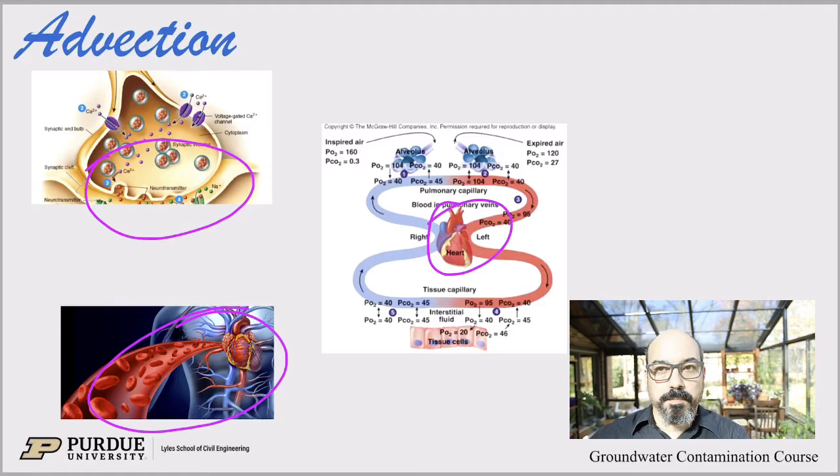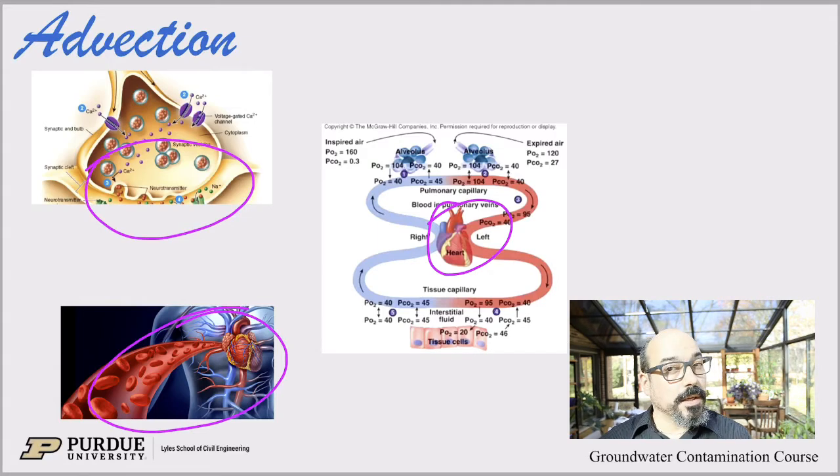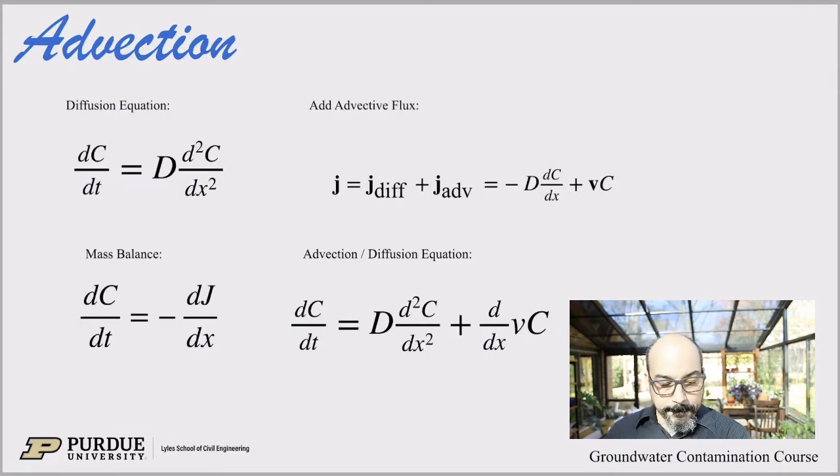We added a pump so we can just pump things fast through the body. Same thing in nature, and that's what we call advection. There's an advective flux when diffusion just doesn't cut it. Advection can just push things from one place to another very efficiently and very fast.